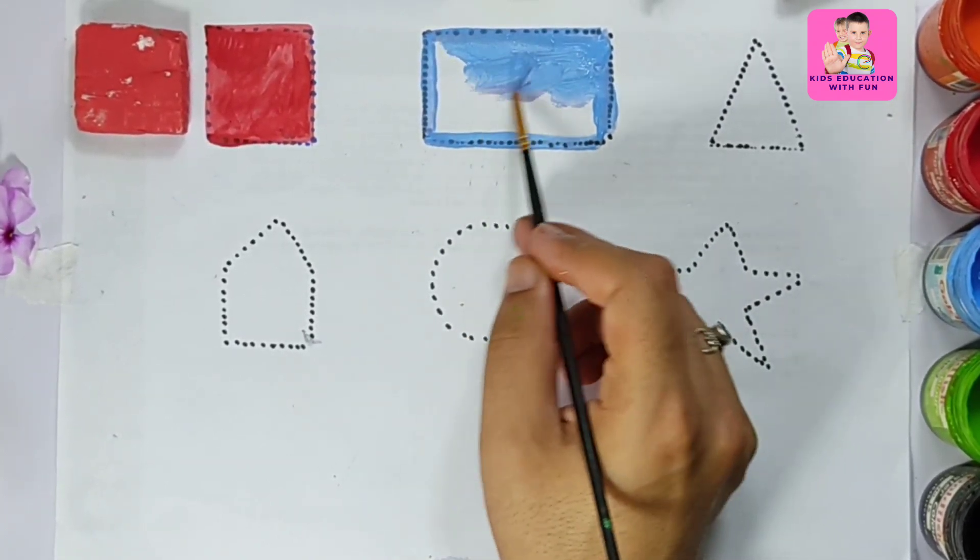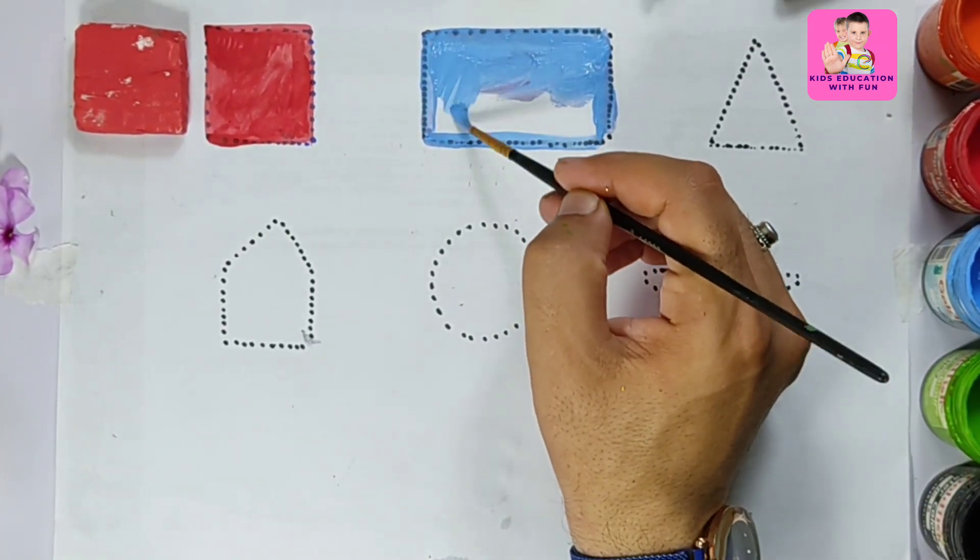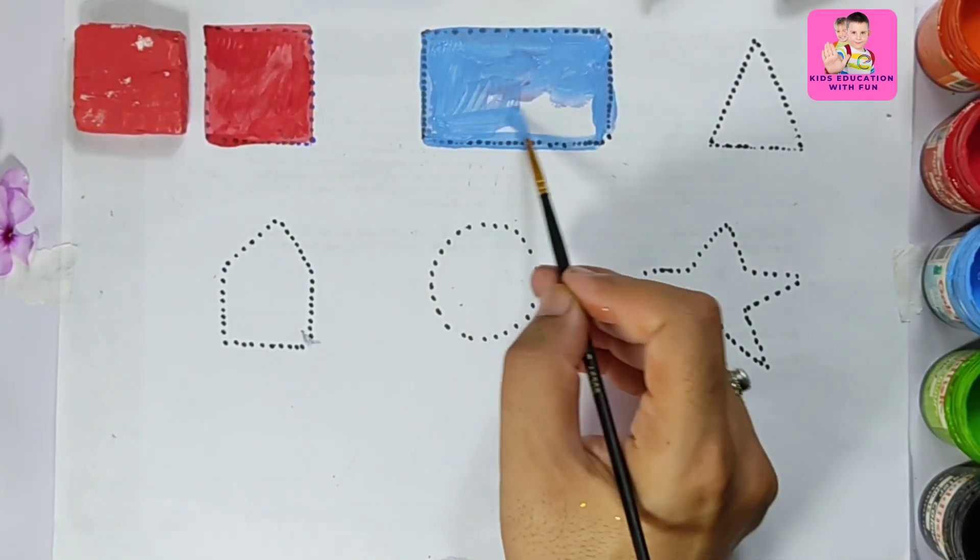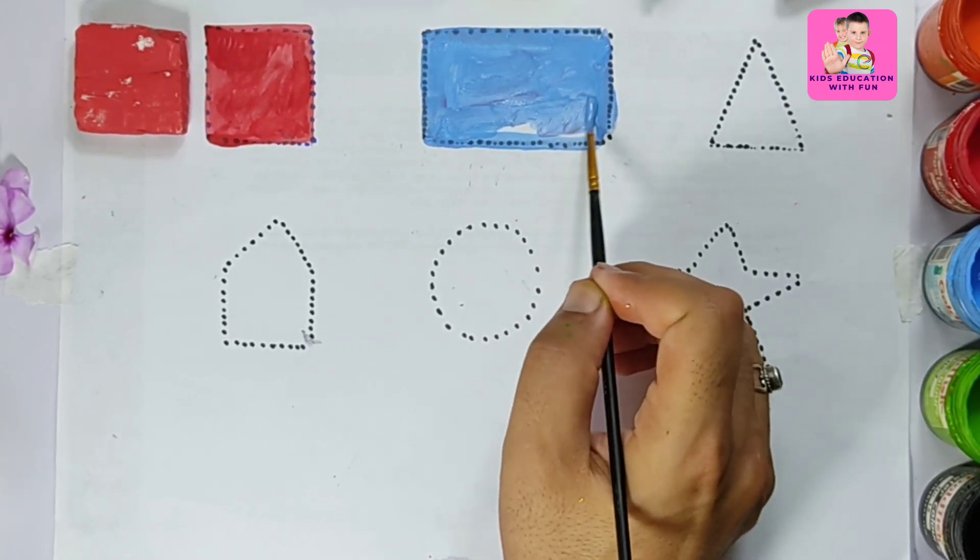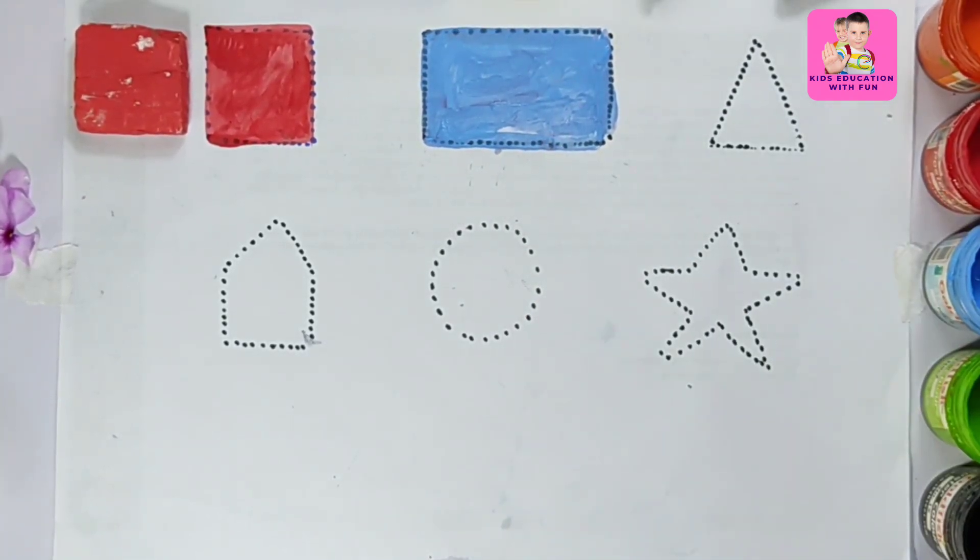We are coloring with light blue color. This is a light blue rectangle. You can see this is a rectangle.